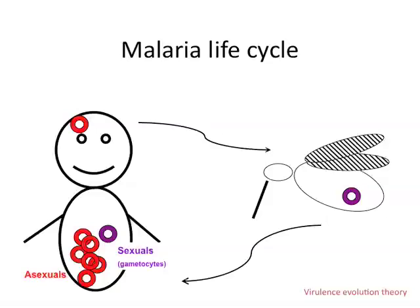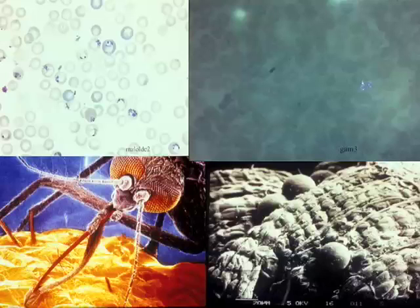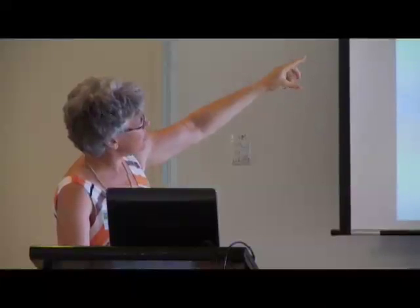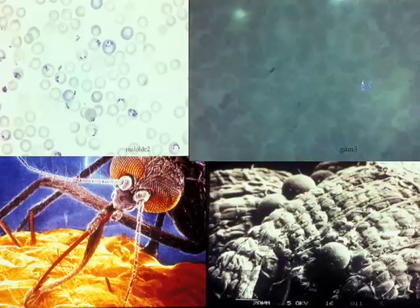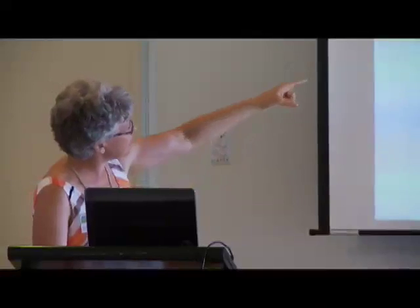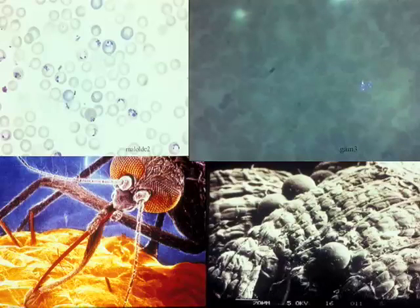The problem for the parasite is that in exploiting its host by creating a lot of asexuals to produce as many sexual forms as it can to get to the mosquitoes, it causes disease. Sometimes it goes to the brain and causes cerebral malaria. More generally, it causes a lot of anemia because every 48 hours it's busting up one of its host's red blood cells. The virulence comes from the asexual replication of the parasite. These are infected red blood cells — the parasite has just burst out of its red blood cell, and those eight progeny are just about to reinfect a new red blood cell. That sparkly thing is a gametocyte, the transmission form, which you can view under polarized light using microscopy.